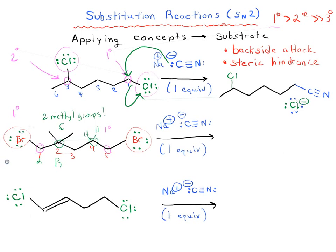it also helps to look at the beta position as well. In this case, this is actually going to be more hindered, and therefore it's going to be slower. If we're only adding one equivalent of NaCN, that means it's going to attack carbon 5 here. So let's draw out the product of this reaction.